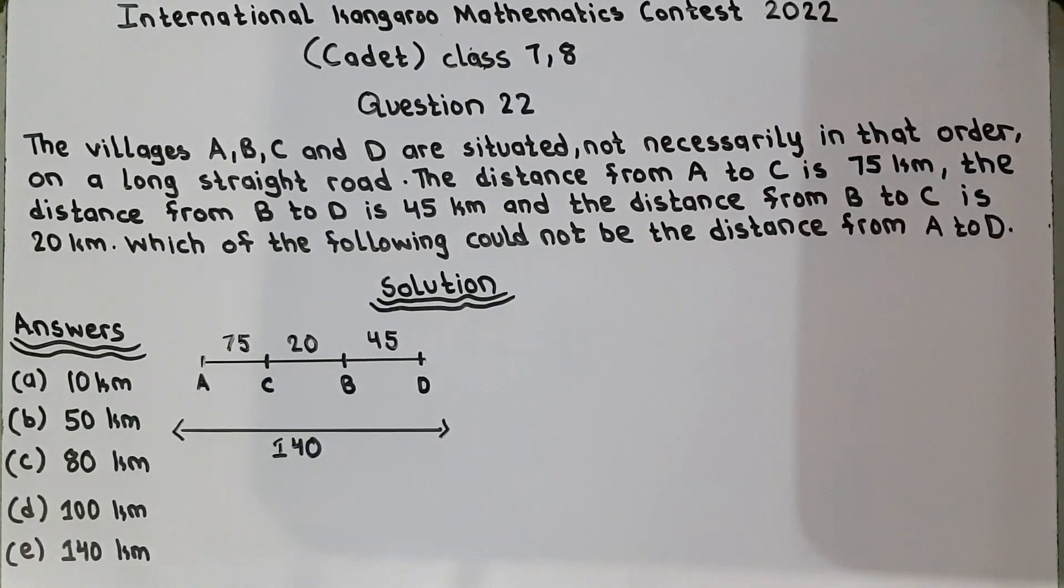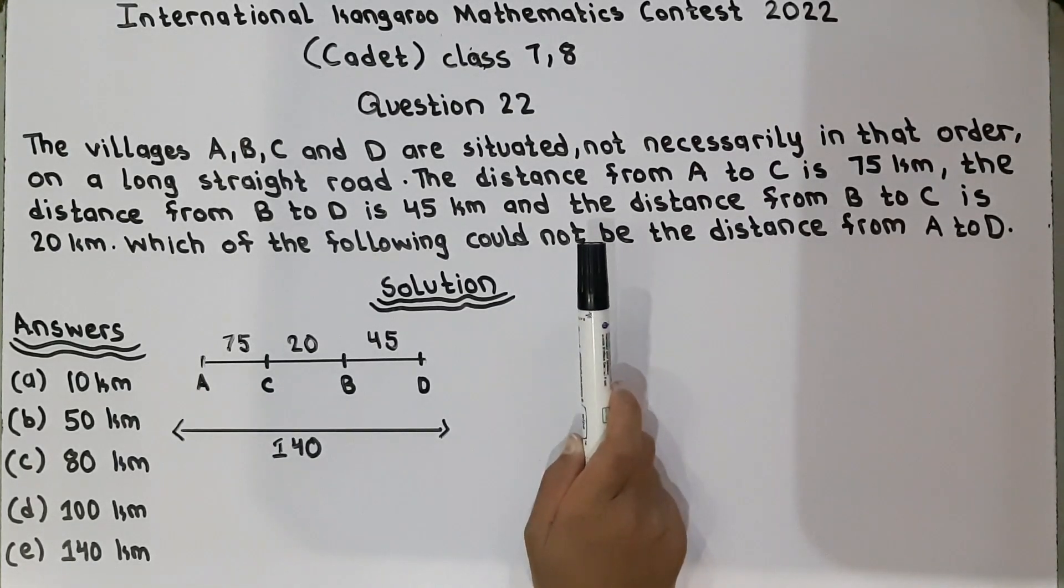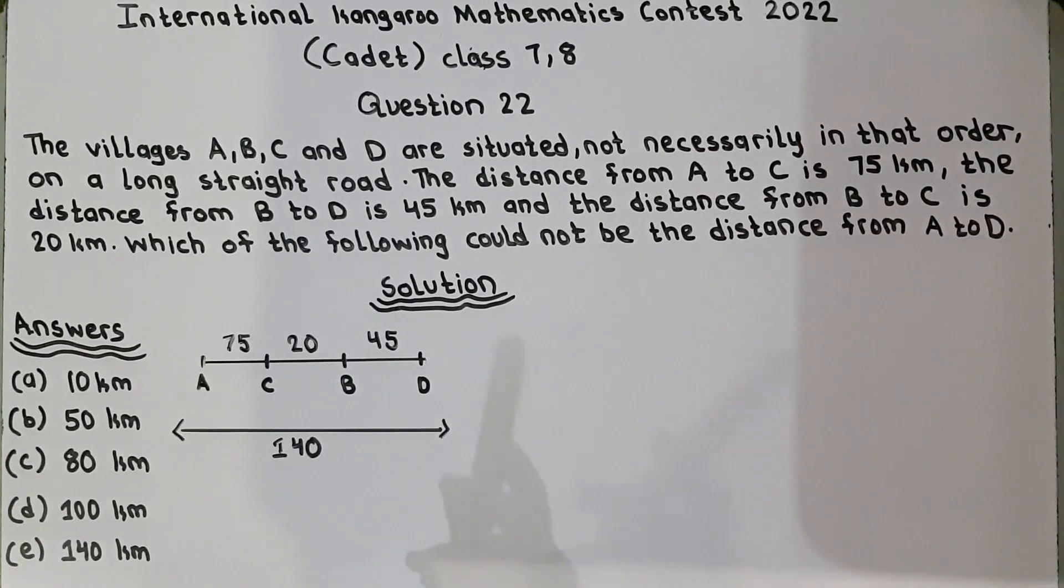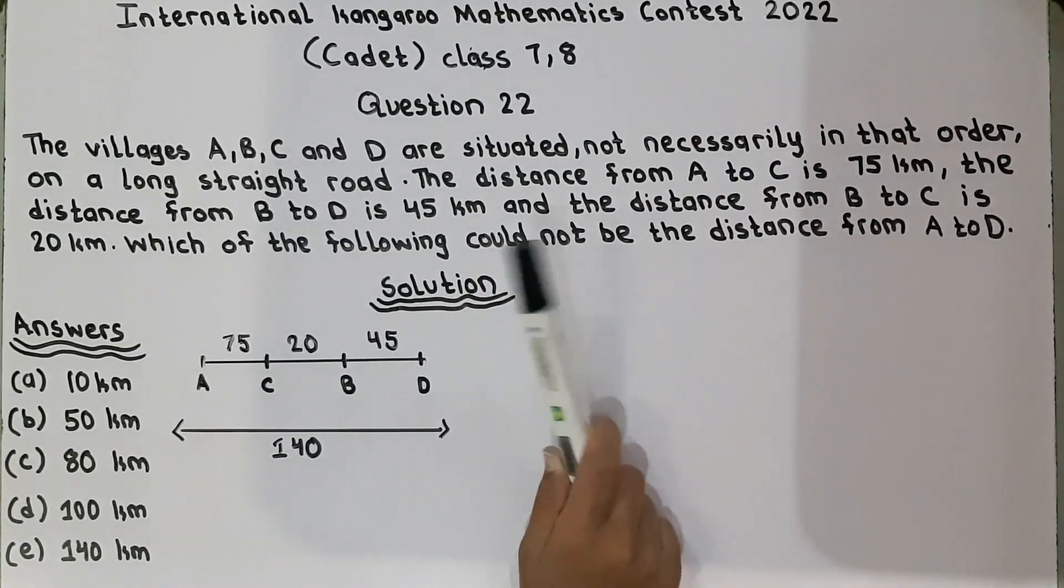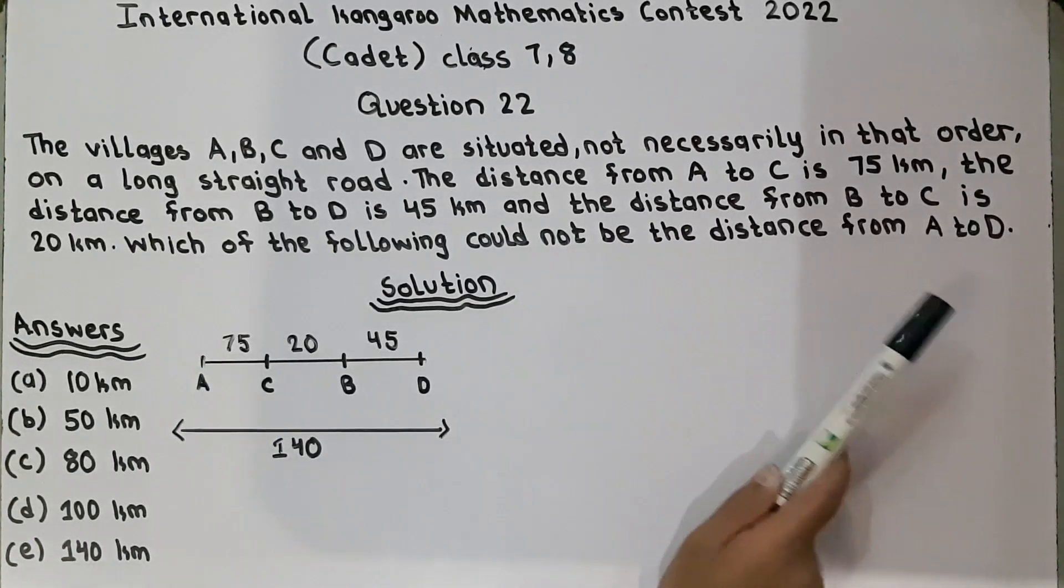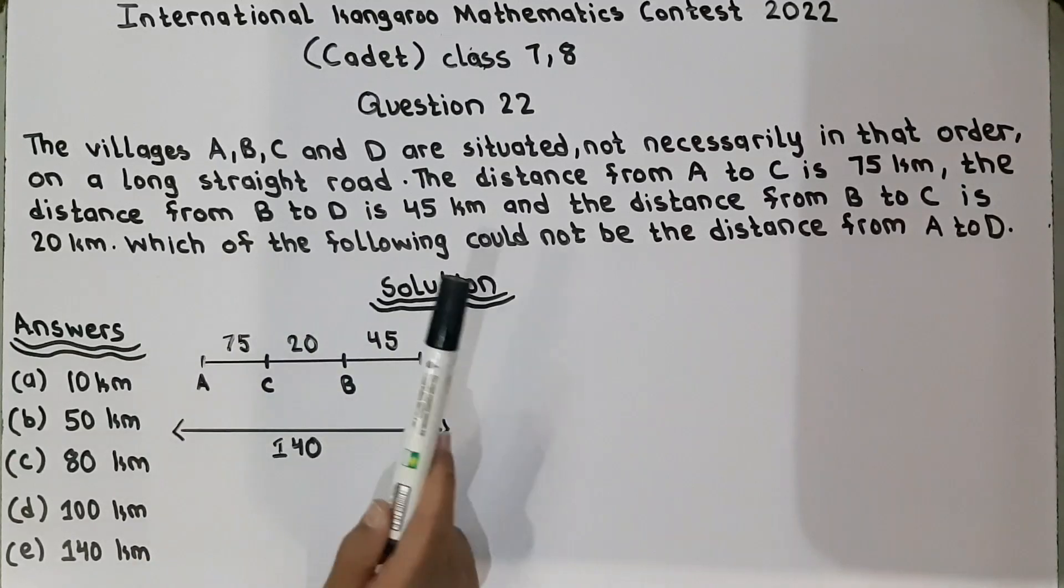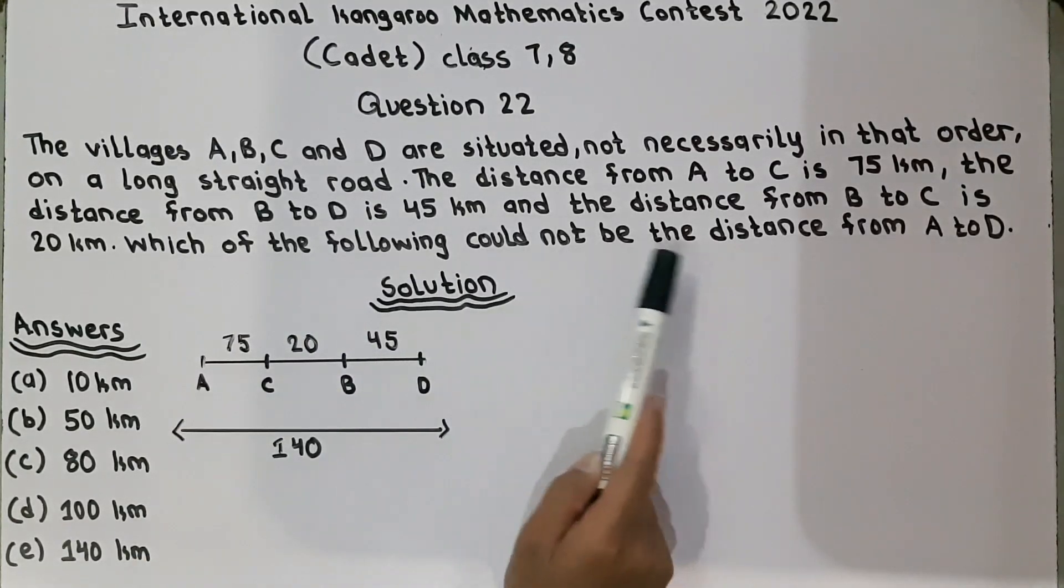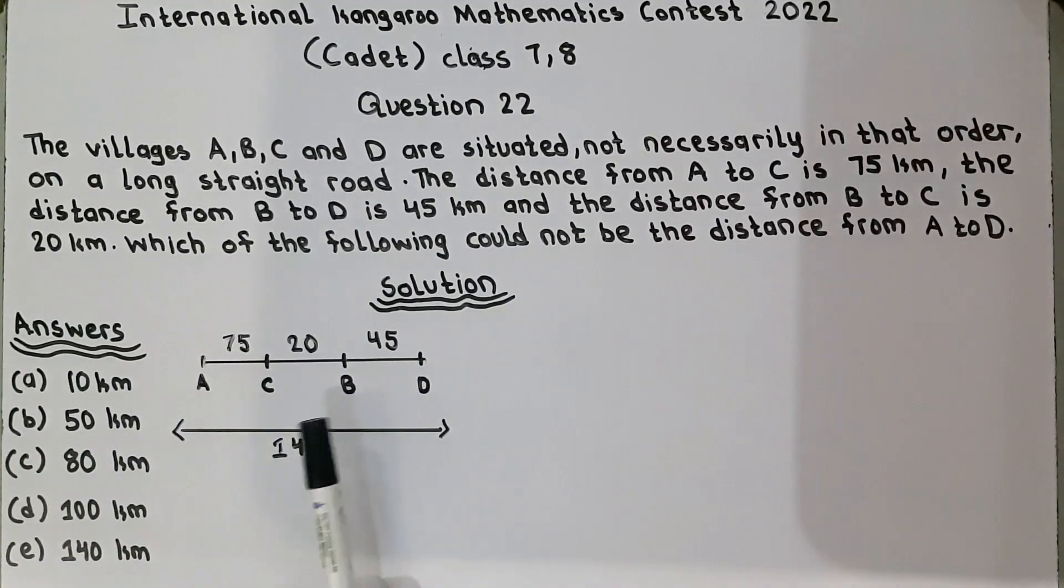They are saying that the villages A, B, C and D are situated not necessarily in that order. It means they are not necessarily situated like A, B, C and D. It could be like A, C, D, B or A, B, D, C. They are like this. So, the distance from A to C is 75, B to D is 45 and B to C is 20 km.